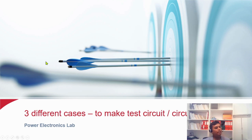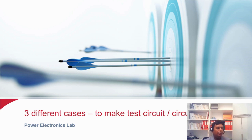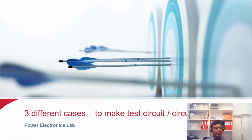Now we know what things are needed in the lab: first, the components, and second, the equipment. By using these components, what are you going to build? By using these equipment, what are you going to measure? You need the test circuit, also called the circuit under test, and there are three different possibilities.